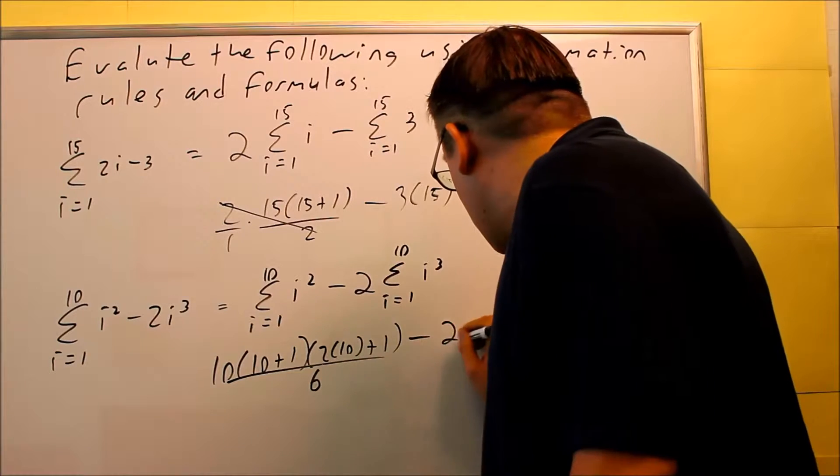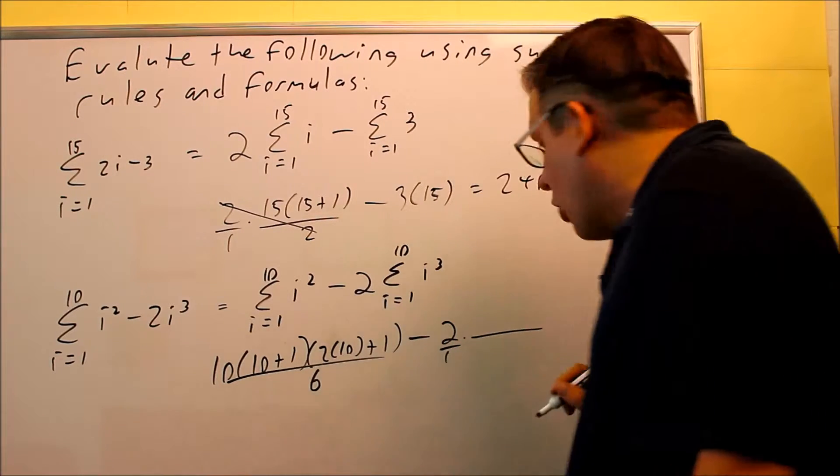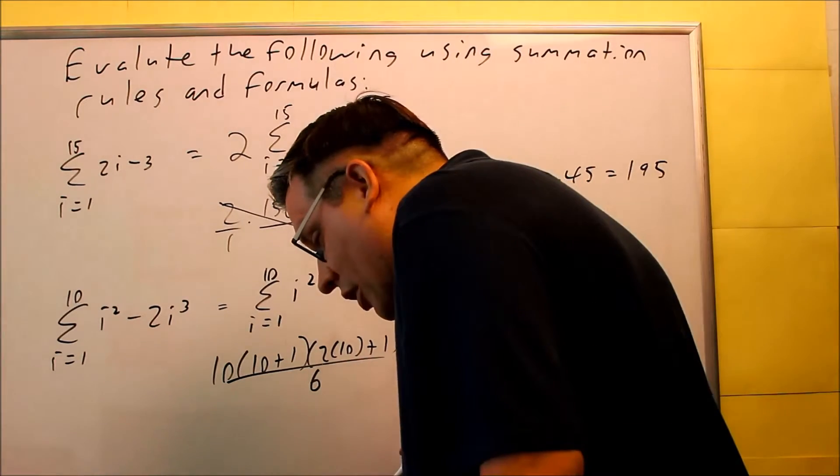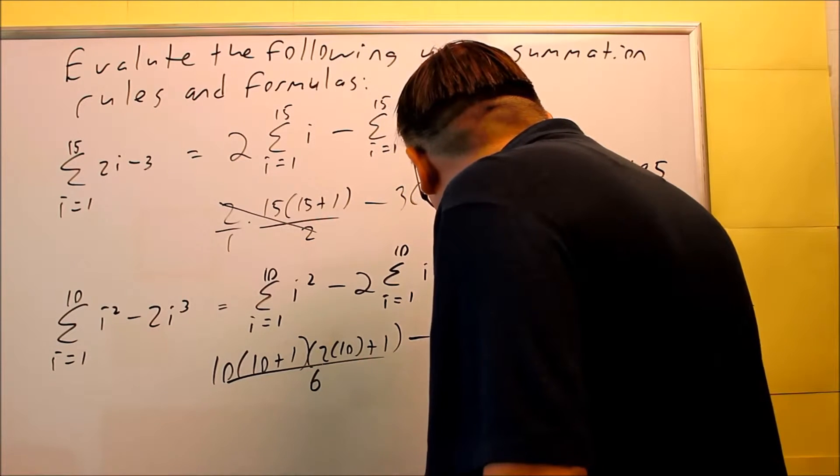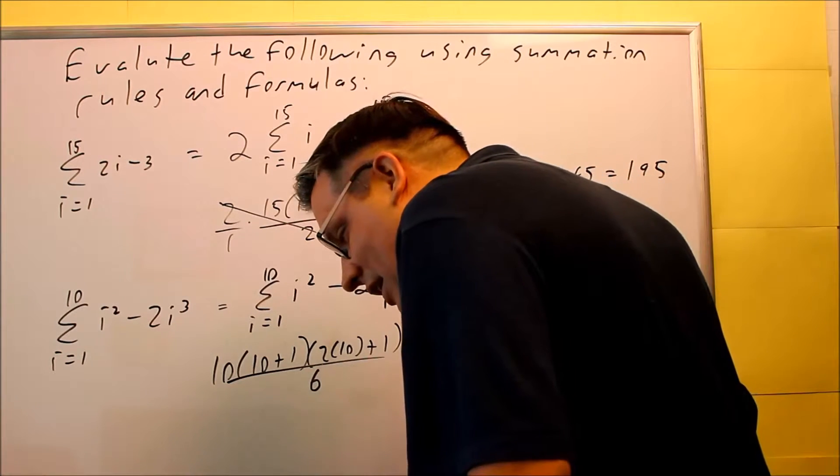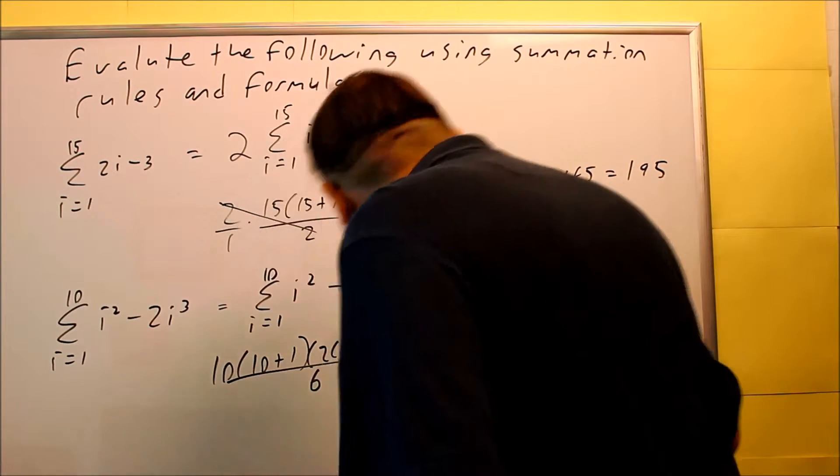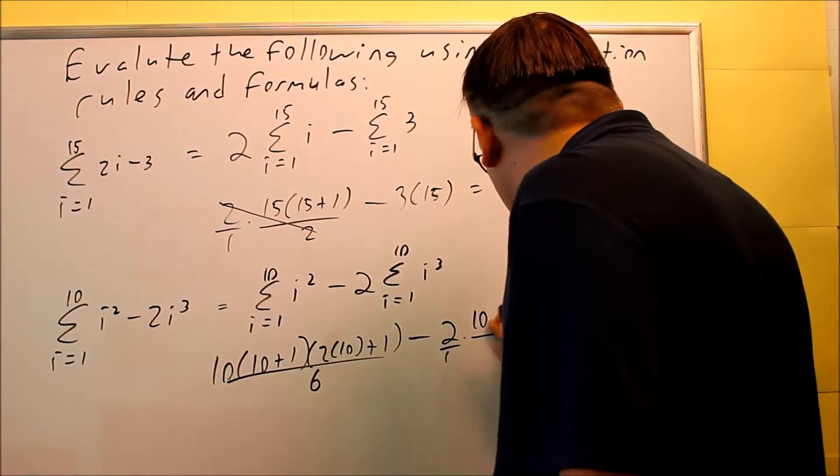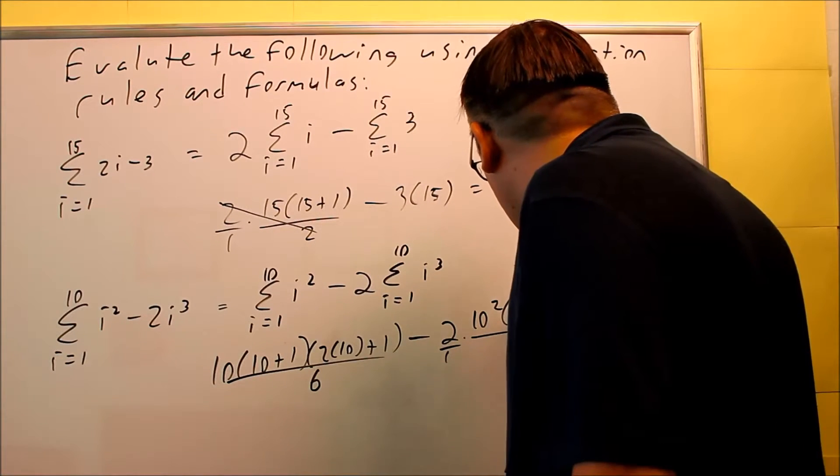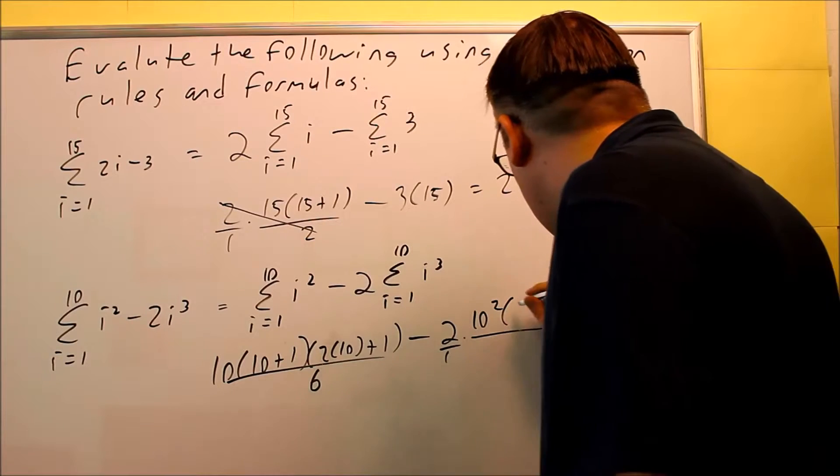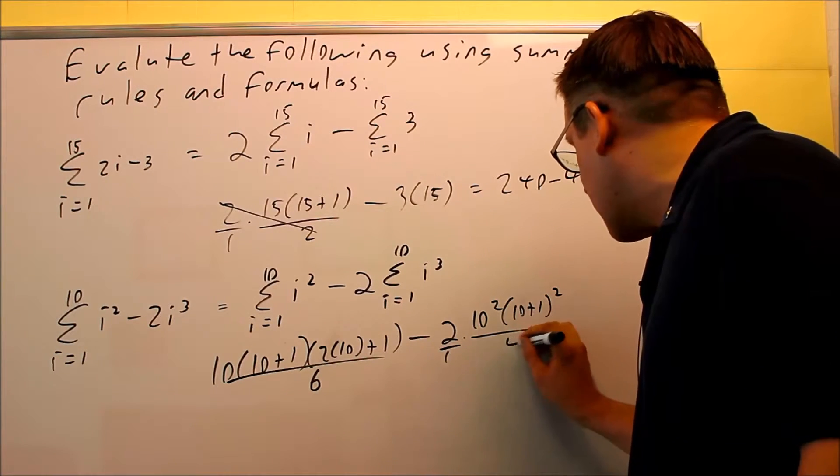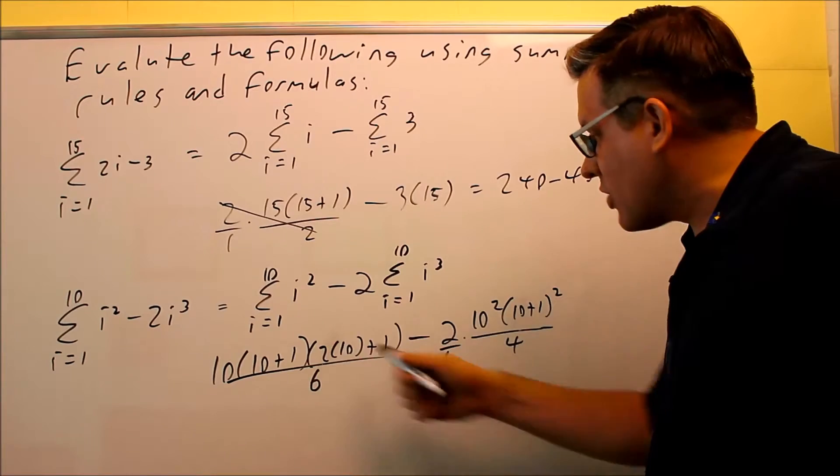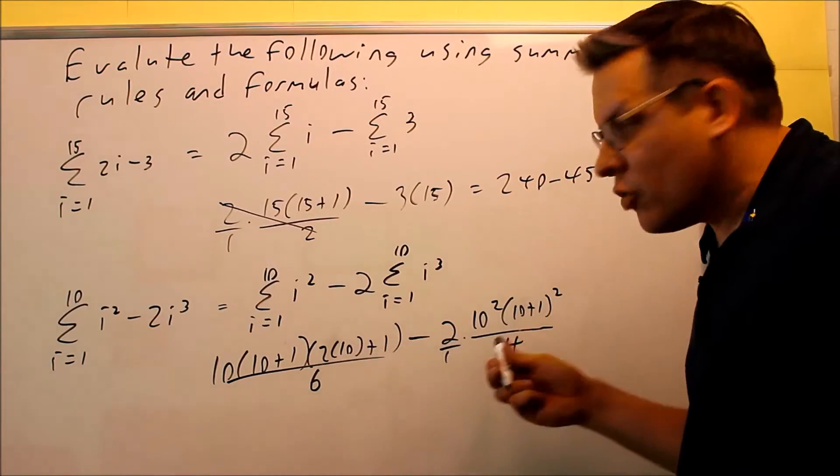Next I have minus 2 times the one with the cube. So if I put the cube in there, we're going to do 10, 10 plus 1, and then I have 10 squared. So I have 10 squared here, that's n squared, and then n plus 1 squared. So 10 plus 1 squared, all that's going to be over 4. So that's the specific formulas I'm using for each one.